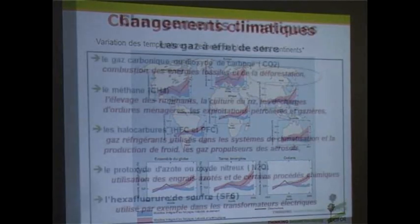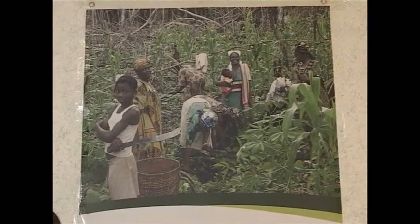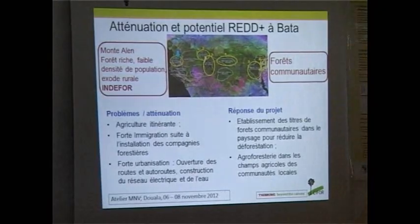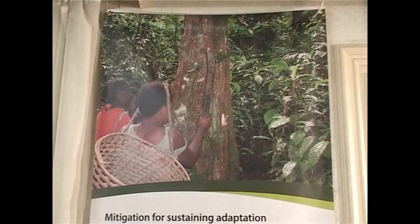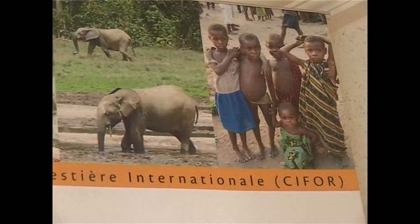C'est ici qu'intervient le COBAM. Le COBAM, c'est un sigle anglais qui veut dire Congo Basin Adaptation and Mitigation, c'est-à-dire le changement climatique et les forêts du bassin du Congo, synergie entre adaptation et atténuation. Le COBAM est un projet à multiples volets : un volet de recherche sur les politiques d'adaptation et d'atténuation dans différents pays du bassin du Congo, et un volet de projets pilotes sur le terrain, pour travailler avec les communautés.